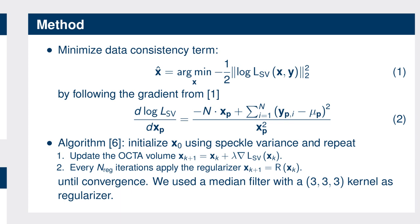However, if we pick an arbitrary initialization for the OCTA volume X and only minimize the data consistency term, we arrive at the OCTA speckle variance volume that we could have computed immediately in the first place. We still need to add a regularizer. Here we use a median filter as a regularizer with a 3x3x3 filter kernel. Not only is the median filter an edge-preserving filter, it also minimizes the L1 norm of our volume in the image domain. The algorithm works as follows: we initialize X0 by computing the speckle variance OCTA volume, apply the regularizer, and perform N reconstruction steps using the gradient and step size lambda, then regularize again and so forth.